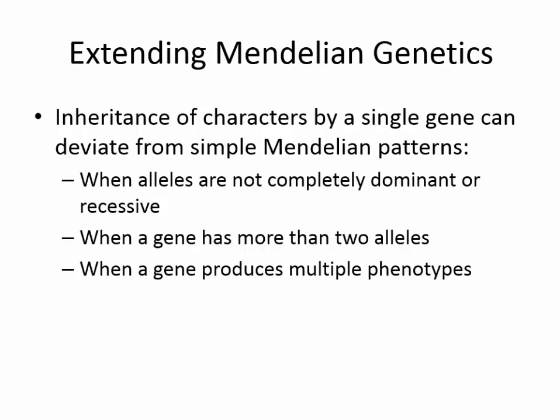If we extend Mendelian genetics, we come to the idea that inheritance of characters by a single gene can deviate from simple Mendelian patterns. What happens when genes are not completely dominant or recessive? When a gene has more than two alleles? When a gene produces multiple phenotypes? Those won't be classical Mendel patterns, but we know now that things weren't as simple as they seemed.